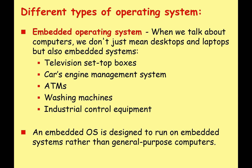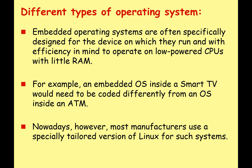The next type is the embedded OS. When we talk about computers, we don't just mean desktops and laptops — we also include things like television set-top boxes, car engine management systems, ATMs, washing machines, and industrial control equipment. An embedded OS is designed to run on embedded systems rather than general-purpose systems. These operating systems are often specifically designed for the device they run on, with efficiency in mind, operating on low-powered CPUs with very little RAM.